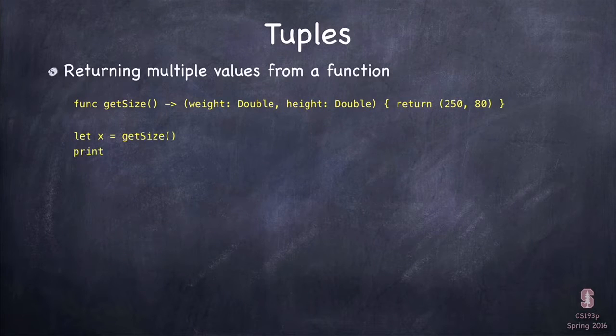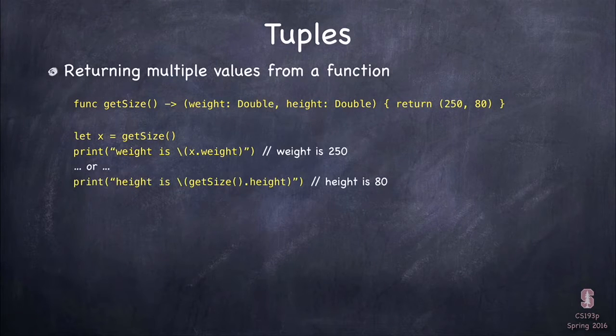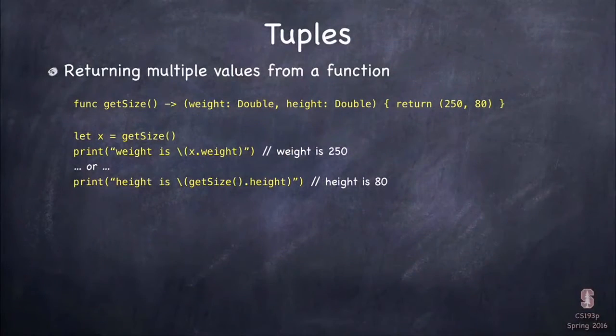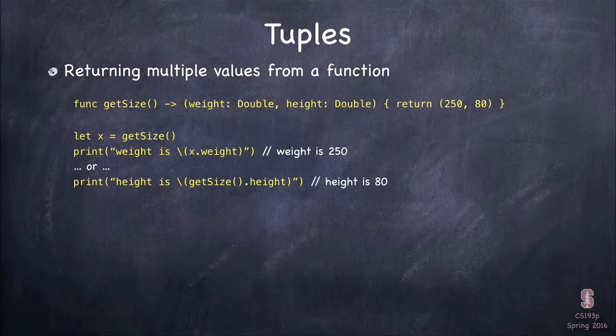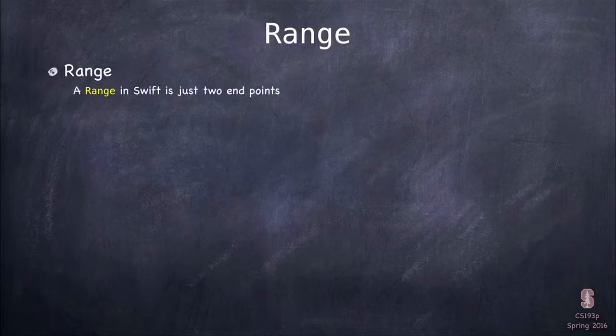So tuples are cool because you can return multiple values from a function with a tuple. We know that return values are arrow and a type. Well, since a tuple can be a type, you can go arrow and a tuple and return values. Can you ignore some of the values? Absolutely you can. If you use underbar, underbar in Swift is the universal I'm ignoring this character. So you can put underbar in there. So here I'm returning this tuple, weight and height, obviously, straightforward how we do that. So tuples are perfectly valid return values. So you can return multiple things from functions.